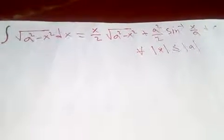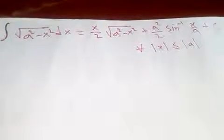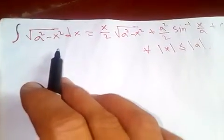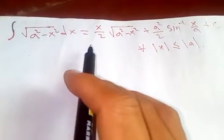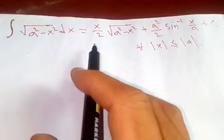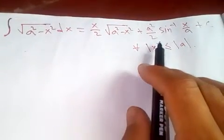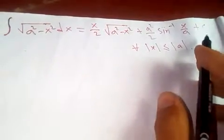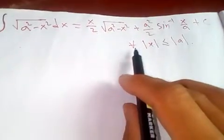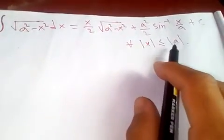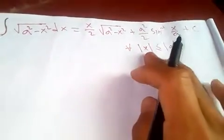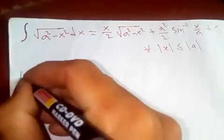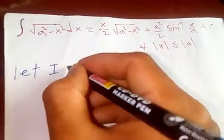Thanks for watching my video today. Let's prove our special integral, which is: the integral of the square root of (a² - x²) equals (x/2)√(a² - x²) + (a²/2)sin⁻¹(x/a) + C, with the condition that |x| ≤ |a|. Now let me assume our integral will be I.